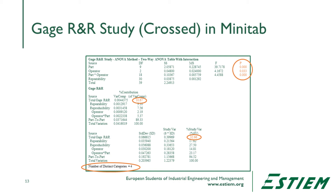In addition to the graphical output, we also get the session window with all of this output. We'll describe percent contributions, study variation, and acceptable ranges recommended by the Automotive Industry Action Group. Looking at the number of distinct categories — that eyeball fit of four — that's exactly what Minitab calculated. Four distinct categories represents a marginal system; you would like to have five or more for a good system.